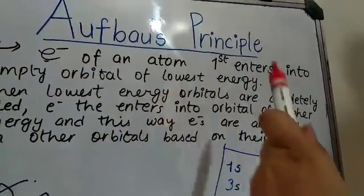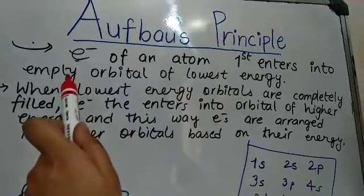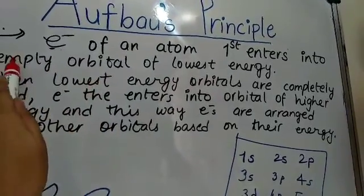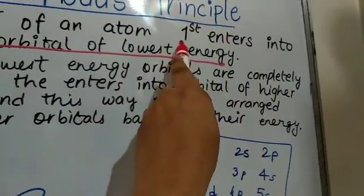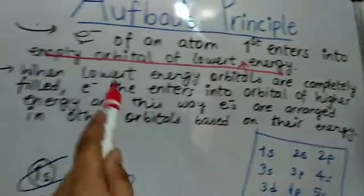Electron of an atom first enters into empty orbital of lowest energy. So it all begins with the lowest energy. Next is,